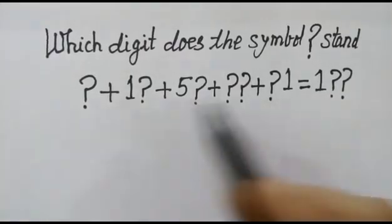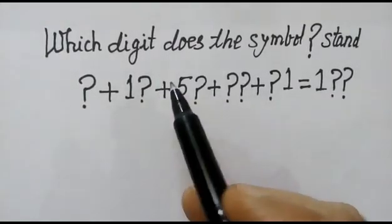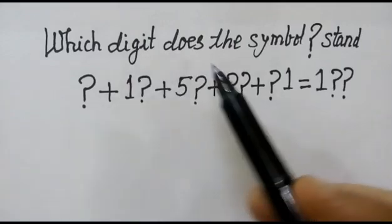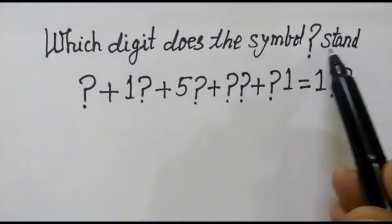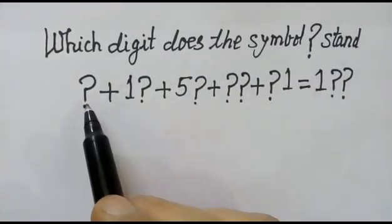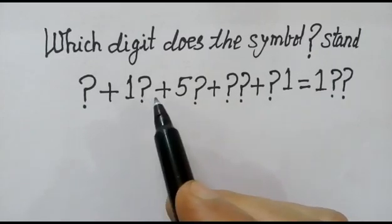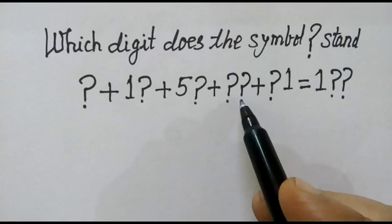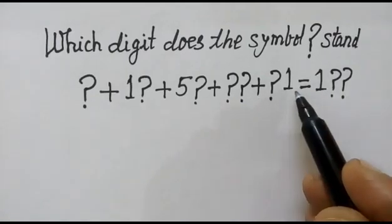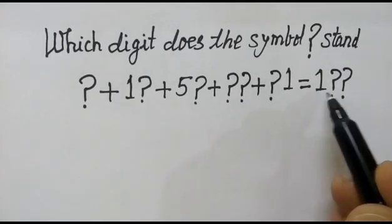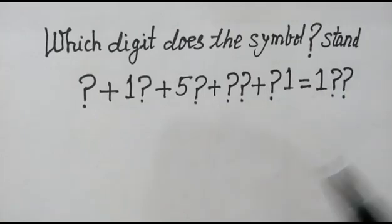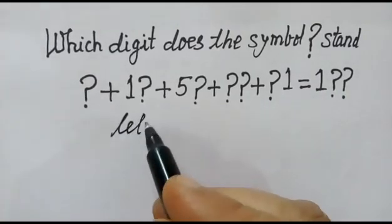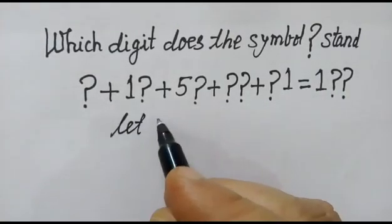Hi friends, in this problem we have to find out which digit does the symbol stand for. The equation is: symbol plus 1 symbol plus 5 symbol plus double symbol plus symbol 1 equals 1 double symbol. Let the value of symbol equal x.